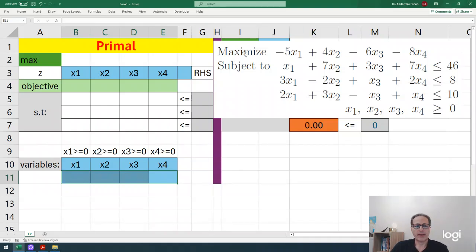Looking at the problem, we have a maximization problem, so I write max here. If it's minimization, change to min. For the objective function, the coefficients for x1 to x4 are: minus 5, 4, minus 6, and minus 8. That's all for the objective.